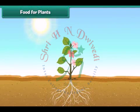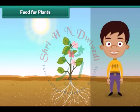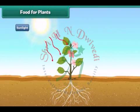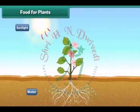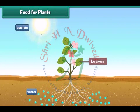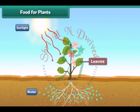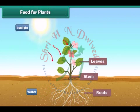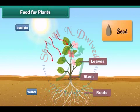Let us now understand where plants get their food. Plants make their own food with the help of sunlight. Plants take water from the soil and prepare food in their leaves. The plant takes up some part of food and the rest is stored in its roots, stem, leaves and seeds.